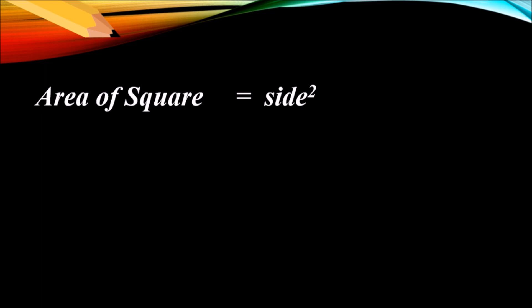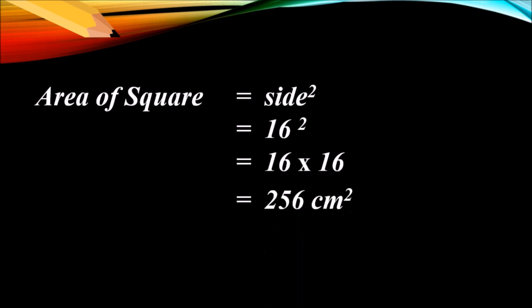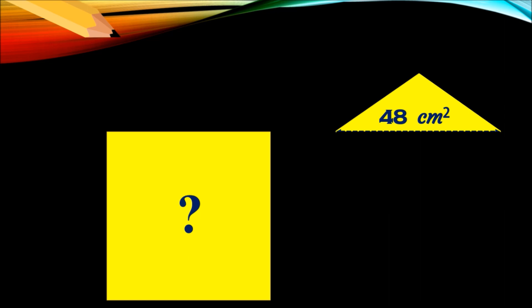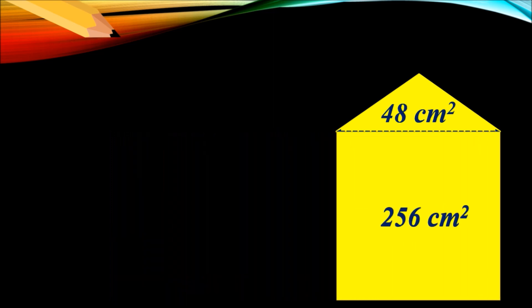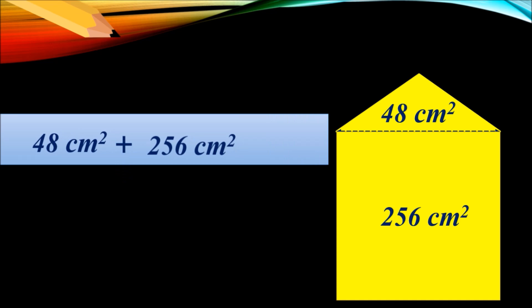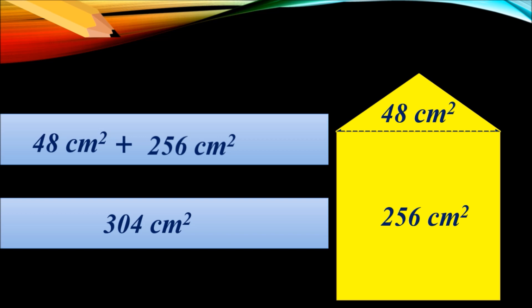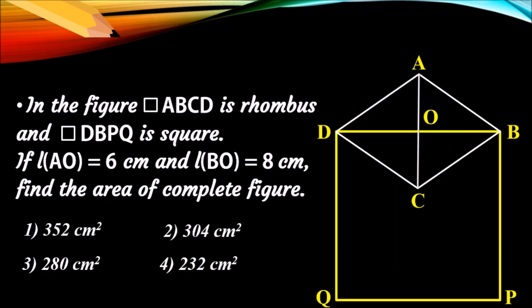We have the formula: area of square equals side squared. Putting the value, 16 squared is 16 into 16, which gives 256 centimeter square. Now we got the area of the square as 256 centimeter square. Let us add the two answers: 48 plus 256 equals 304 centimeter square, which is our expected answer. The second option, 304 centimeter square, is the correct answer.